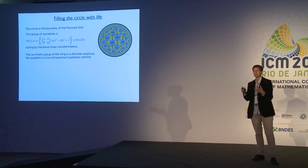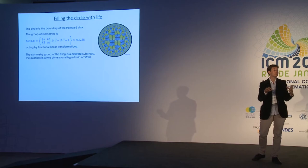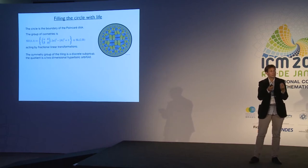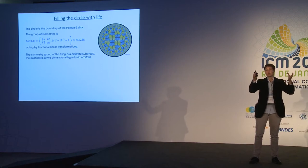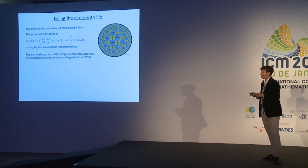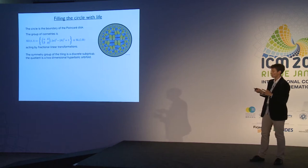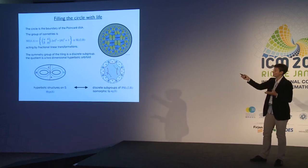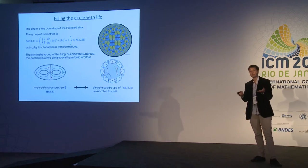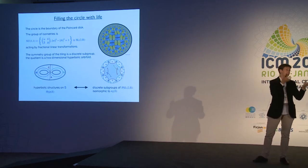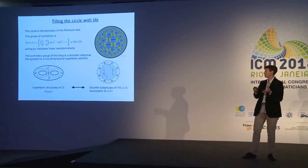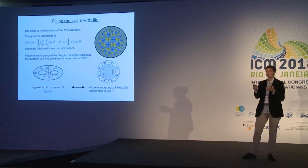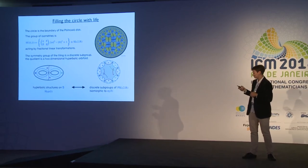Looking at a tiling pattern, its symmetry group gives us a discrete subgroup of SU(1,1) or PSL(2,ℝ). The quotient space of the disk by the action of this discrete subgroup gives a hyperbolic orbifold — a two-dimensional orbifold with a hyperbolic metric realized as the quotient of the hyperbolic plane. This correspondence between symmetry groups of tilings, discrete subgroups of the isometry group of the Poincaré disk, and hyperbolic structures on two-dimensional surfaces is fundamental to my talk.